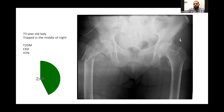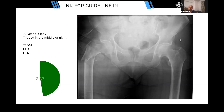Ideally, according to the NICE guidelines for the best practice tariff, I need to get her admitted to the ward within four hours and aim to operate within 36 hours unless there is a medical reason not to. She would need to be reviewed pre-operatively and post-operatively on the ward by an orthogeriatrician.